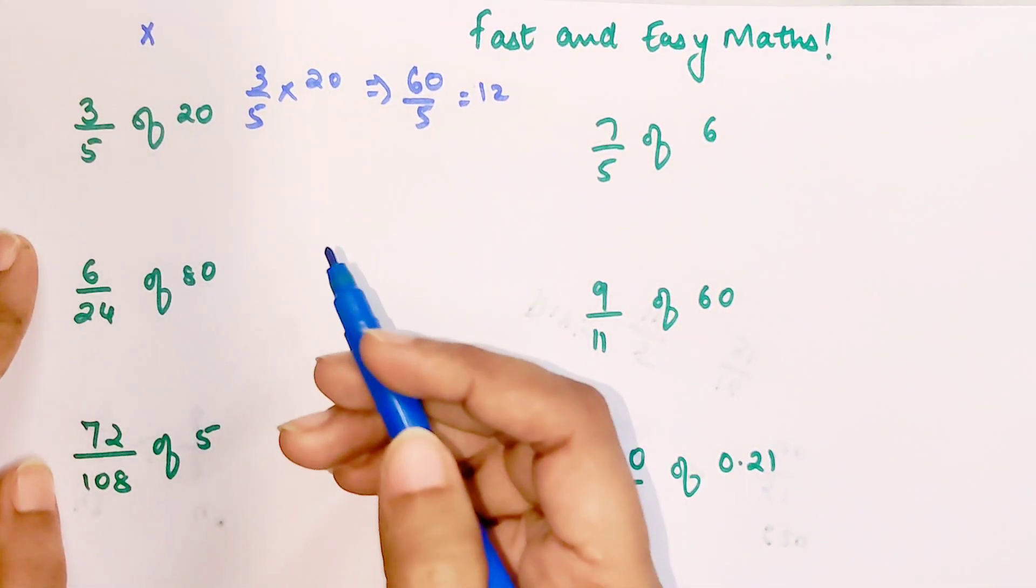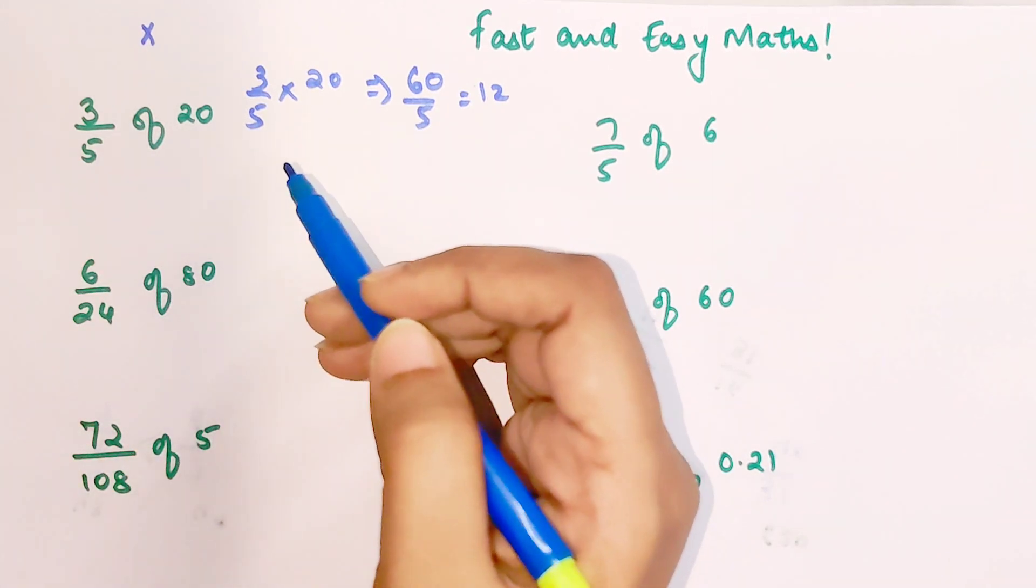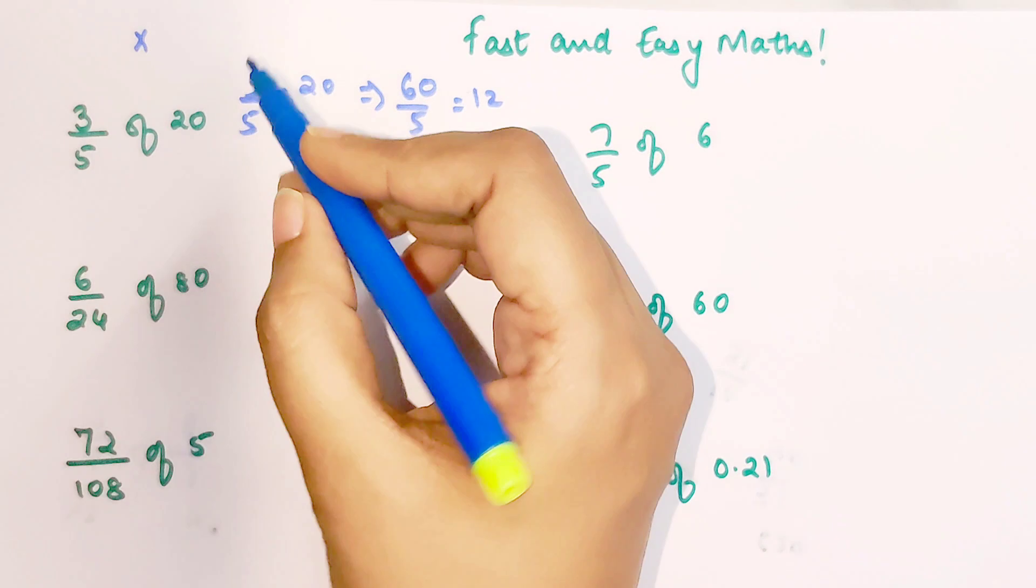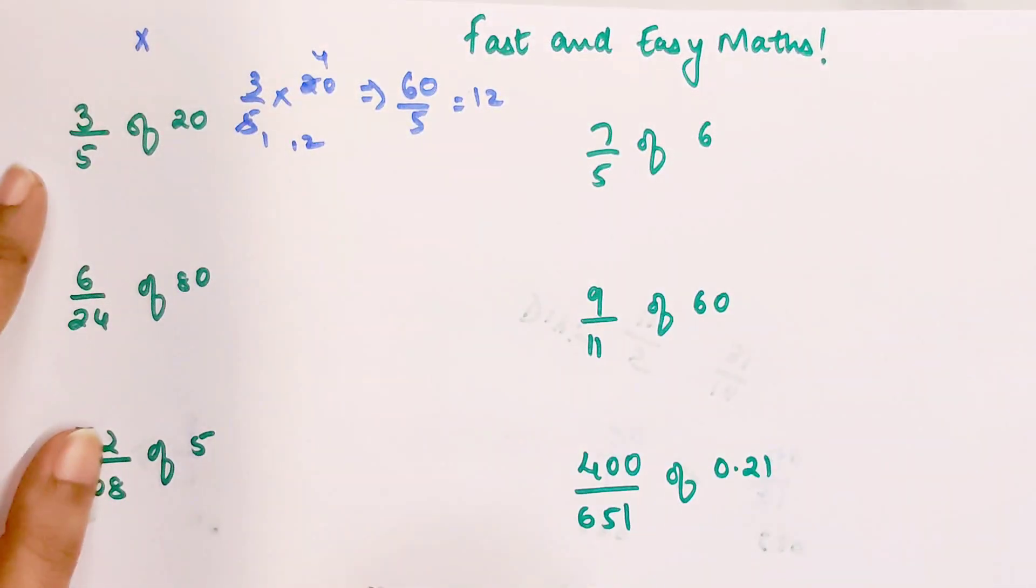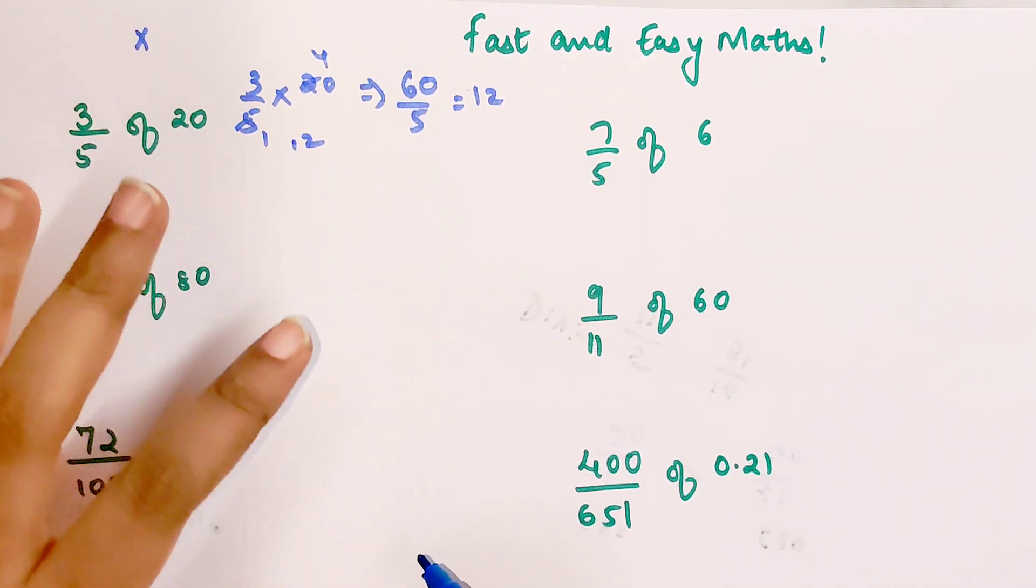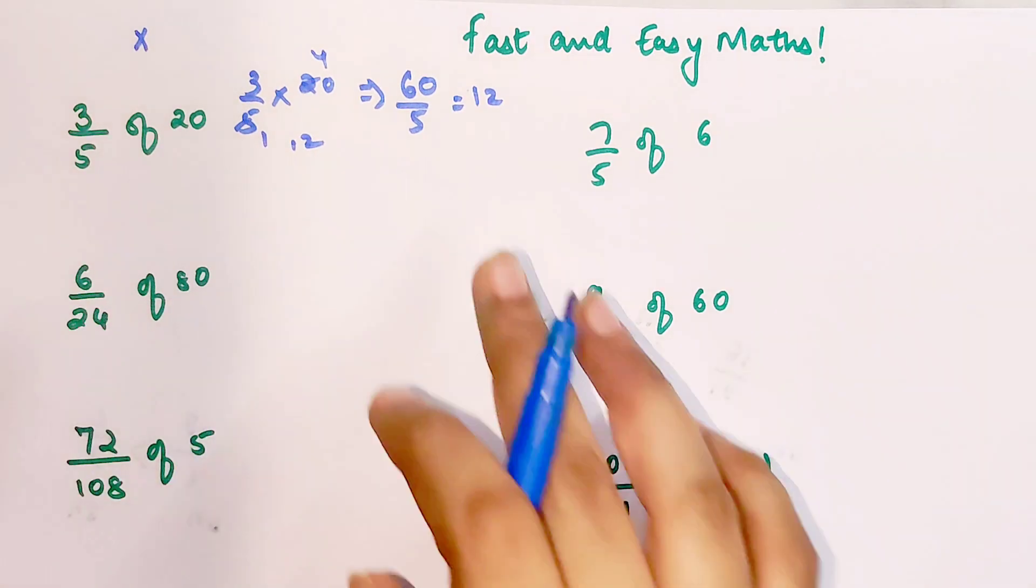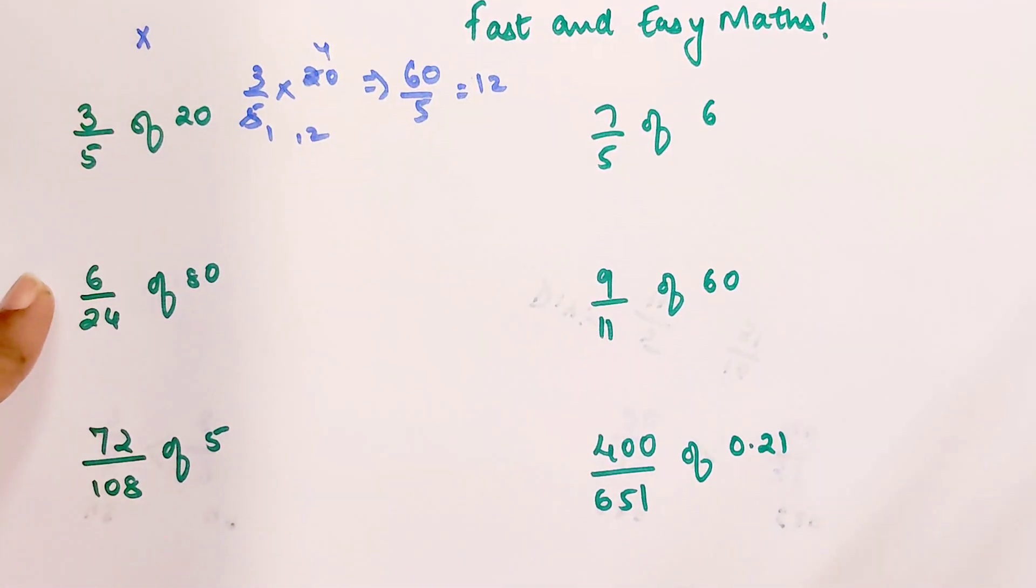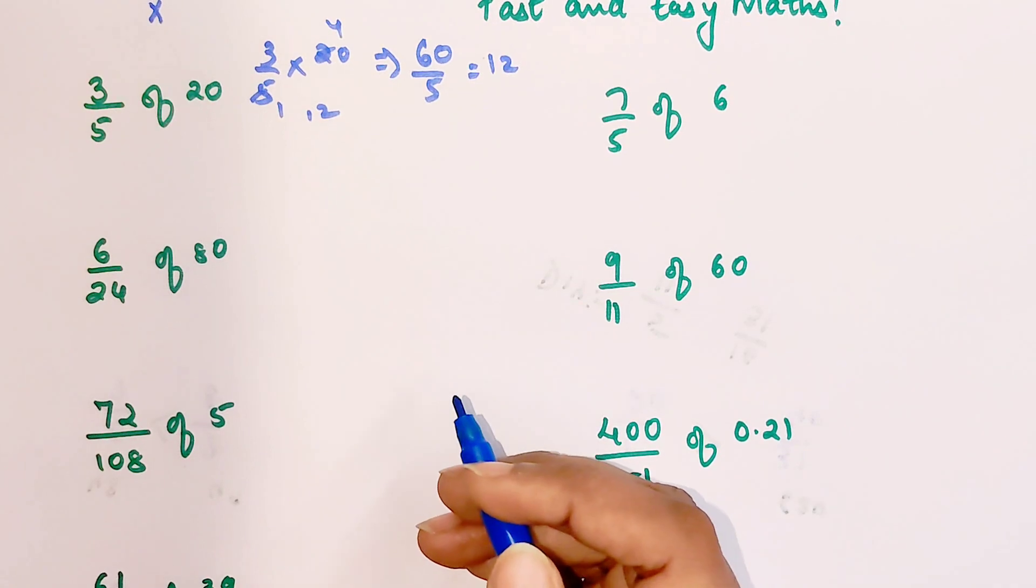What you do is 3 into 20 is 60 upon 5, and your answer becomes 12. But whenever you have something like this with a denominator, always check first if something can get cancelled. Here I know 5 ones are 5 and 5 fours are 20, and 3 into 4 is 12. This way your answer comes quickly and you might not make as many mistakes.